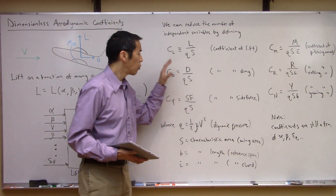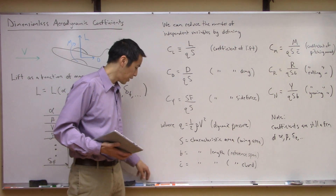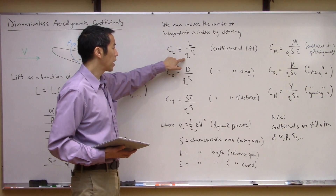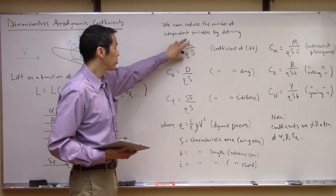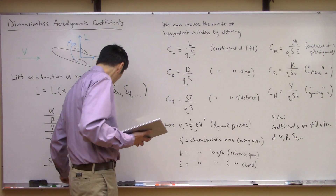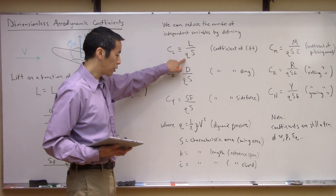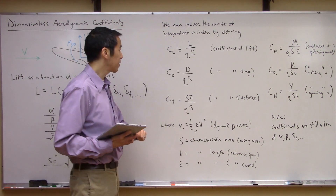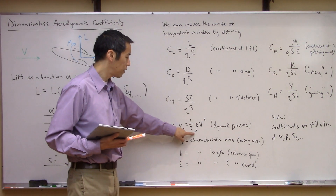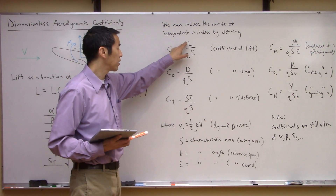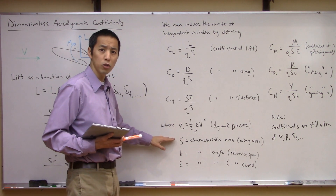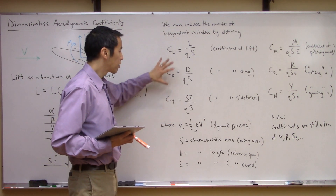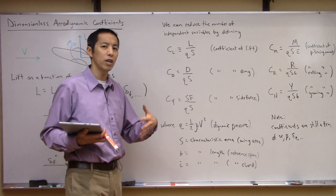So we're going to look at coefficients of lift, drag, side force, pitching, yawing, and rolling moment. Here's how they're defined: you take the lift, divide by the dynamic pressure and the wing area. What this gets you is a dimensionless coefficient that is independent of both the dynamic pressure — which is one-half rho V squared — so it normalizes out the density of the fluid and the velocity, as well as the area.